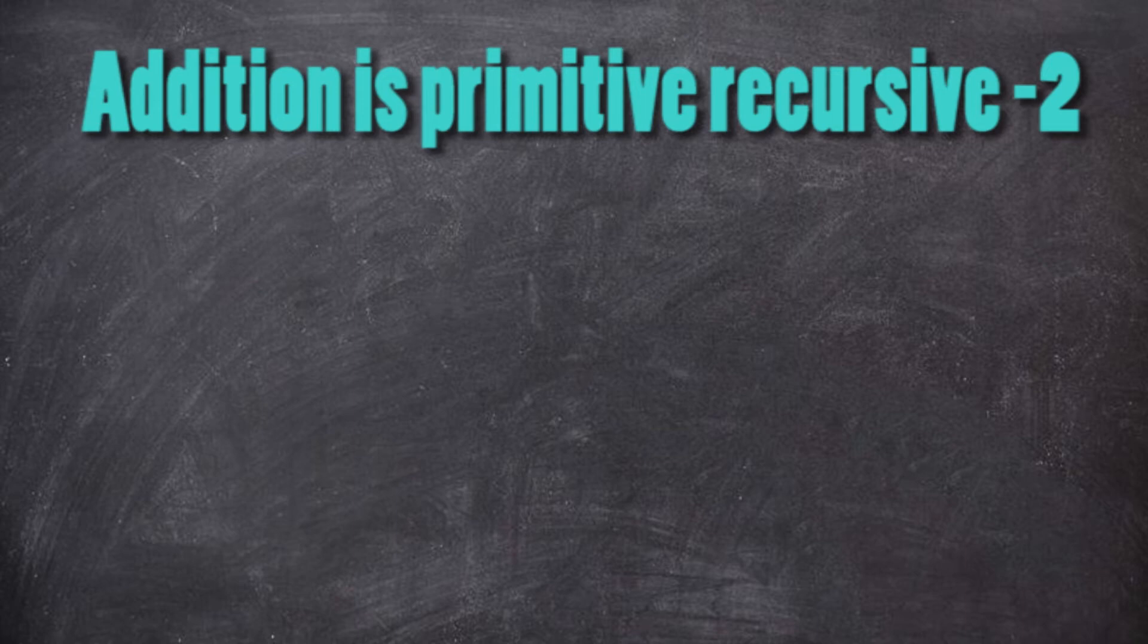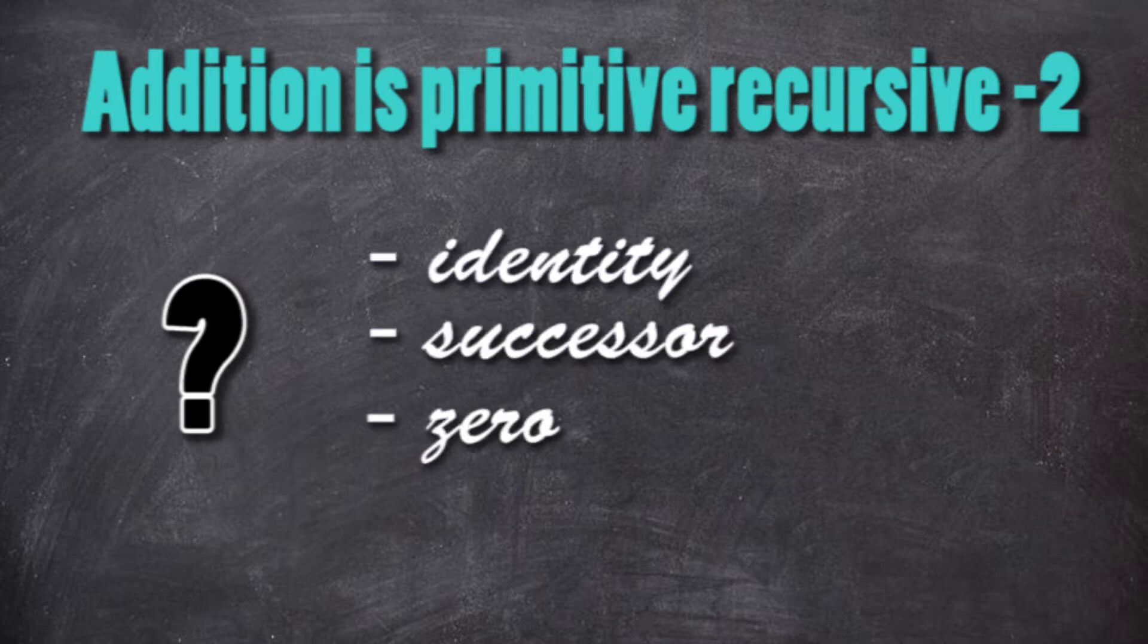Let's start with the addition. How can we write the addition by using only the identity, successor and zero functions?